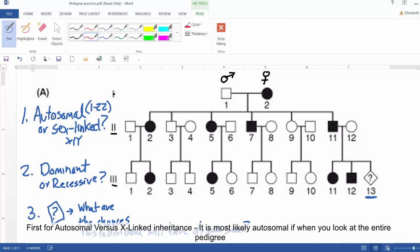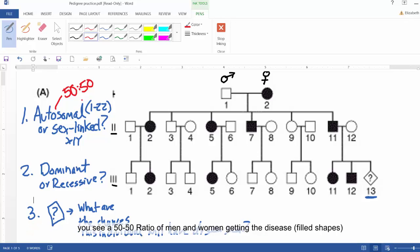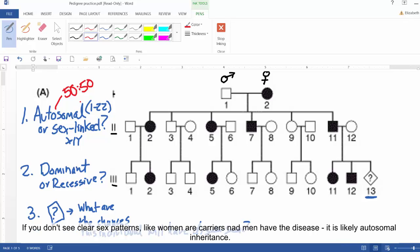First for autosomal versus sex-linked. For autosomal, if you look across the pedigree and it looks like about a 50-50 ratio men to women have the disorder and you don't see any clear patterns in the pedigree, like all the women are carriers and only men have the disease, it's likely autosomal.